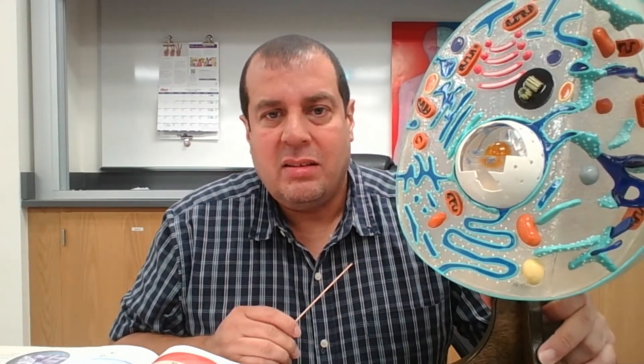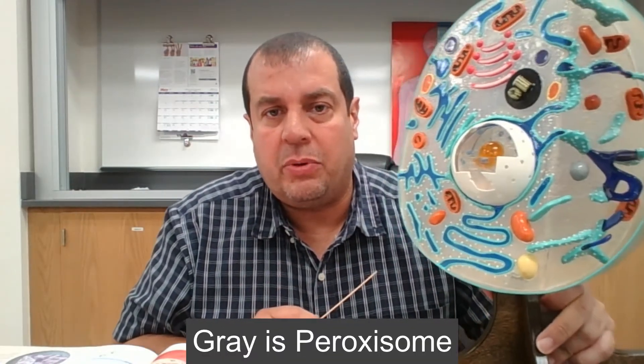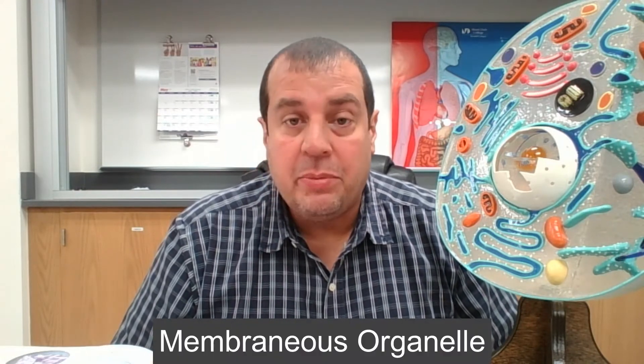Let's look at peroxisomes. Peroxisomes are vesicles containing degradative enzymes that break down things within themselves. Their functions are the catabolism of fats and other organic compounds, and the neutralization of toxic compounds generated in the process. Peroxisome is a membranous organelle.